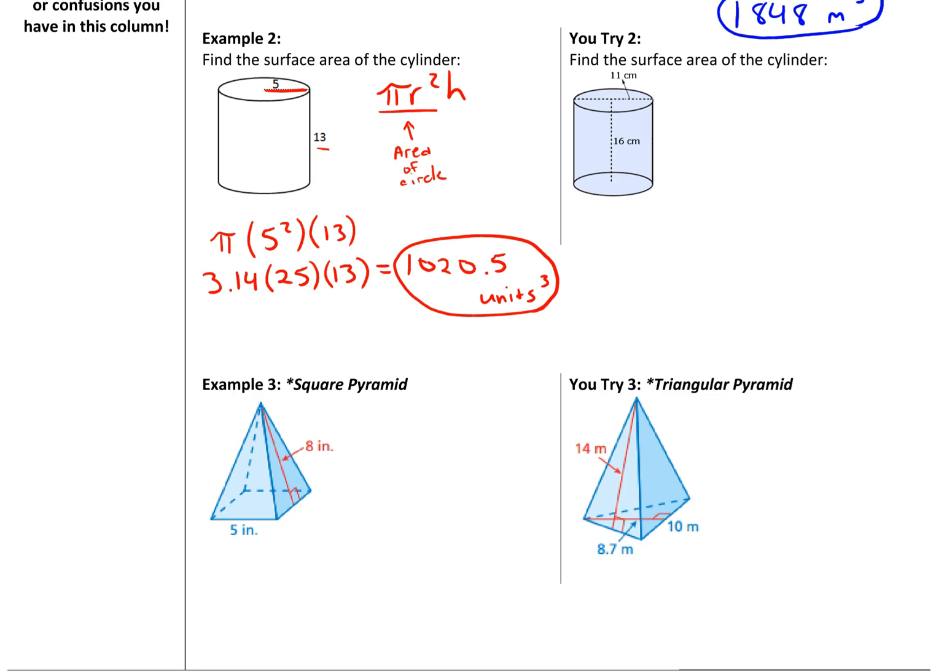Alright, and you try 2. Keep in mind you have a diameter of 11, which means your radius is 5.5 centimeters. So looking at our formula, pi r squared h, 3.14 times your radius, 5.5 squared times the height, which is 16.